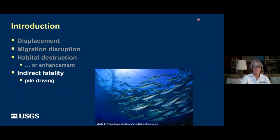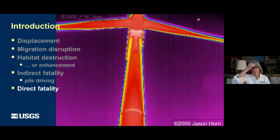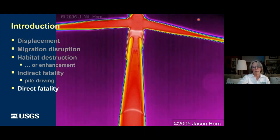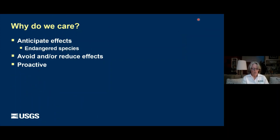Fatality can also be caused indirectly — for example, in offshore wind, pile driving can cause the explosion of fish swim bladders if they're close to the pile drivers. And finally, we can have direct fatality where animals collide directly with the turbines. This video was taken by Jason Horne in 2005.